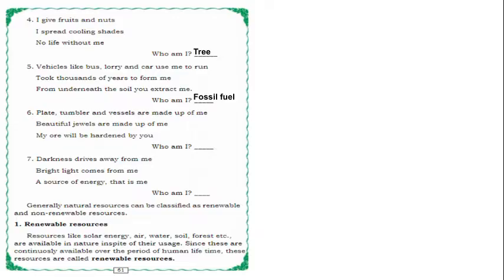Which we will use to move the vehicles. Plate, tumbler and vessels are made up of me. Beautiful jewels are made up of me. My ore will be hardened by you. Which ore is it, children? Gold. Darkness drives away from me. Bright light comes from me. A source of energy that is me. Who is this, children? Yes, exactly — Sun. From where we will get light on earth? From the sun itself.